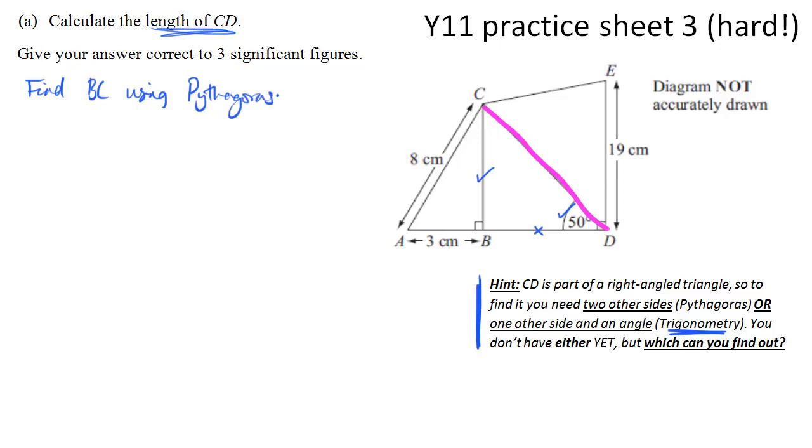When you use Pythagoras, the first thing to do is write down the equation for the triangle that you're dealing with. So here we're going to write down BC squared, the thing that we want, plus 3 squared, so that's the other short side, is equal to 8 squared. Now remember, when you're using Pythagoras, the hypotenuse always appears on its own, so on one side of the equation by itself.